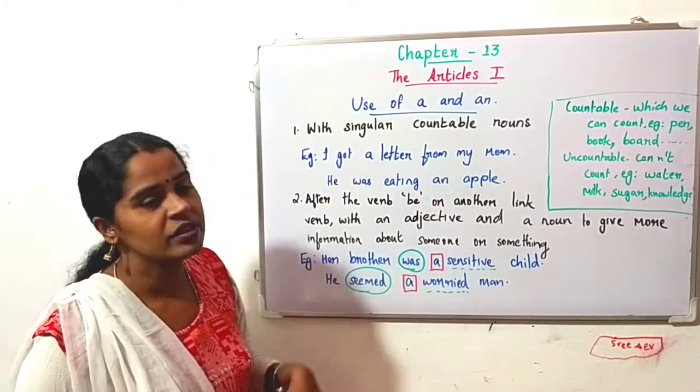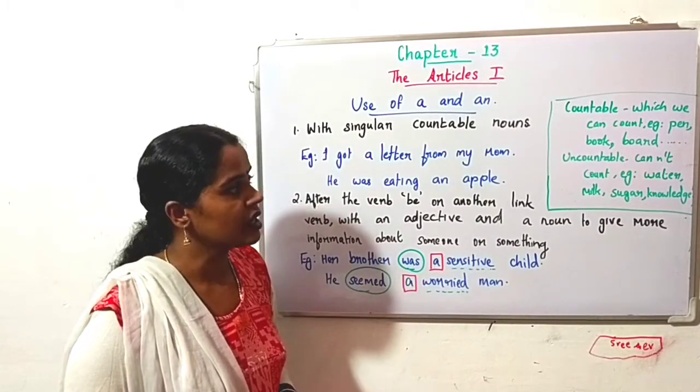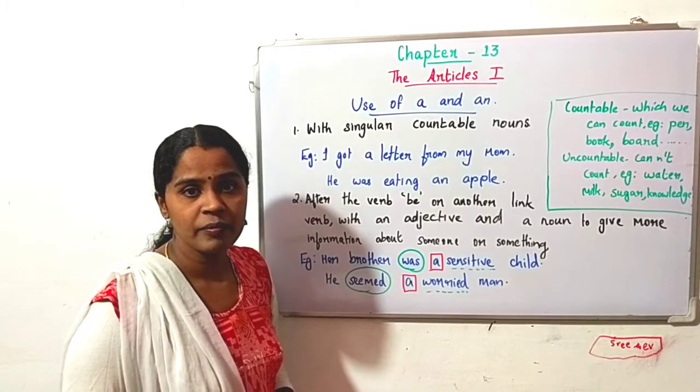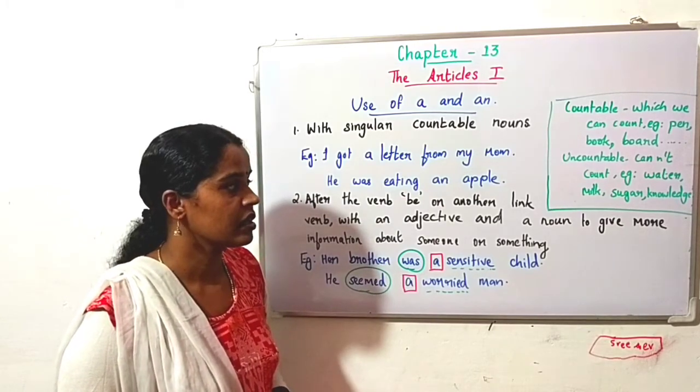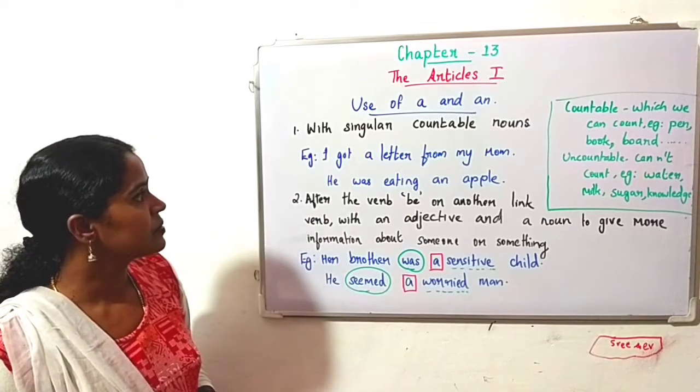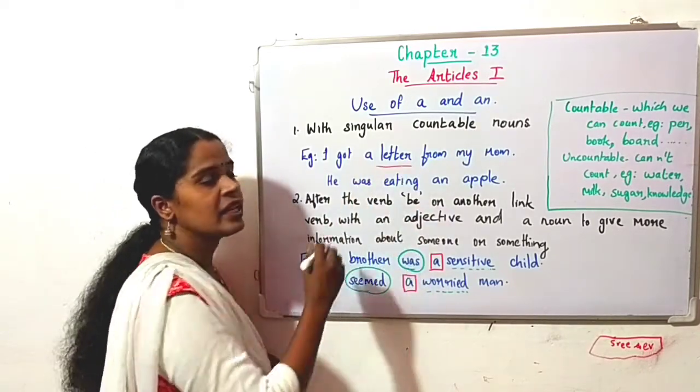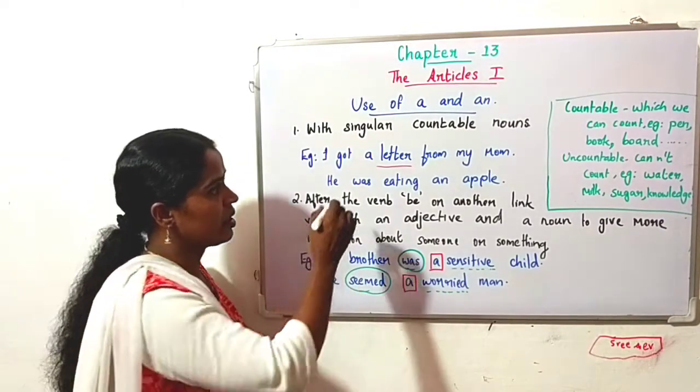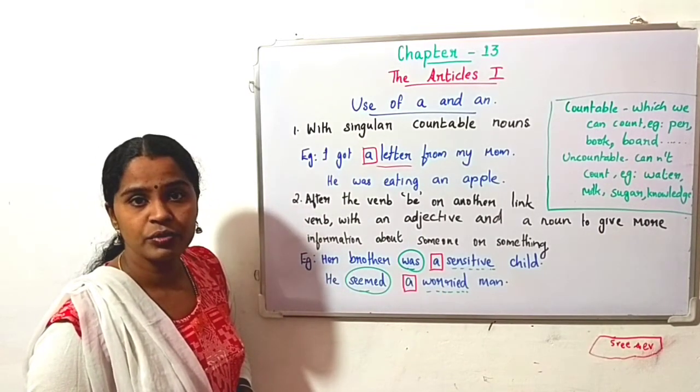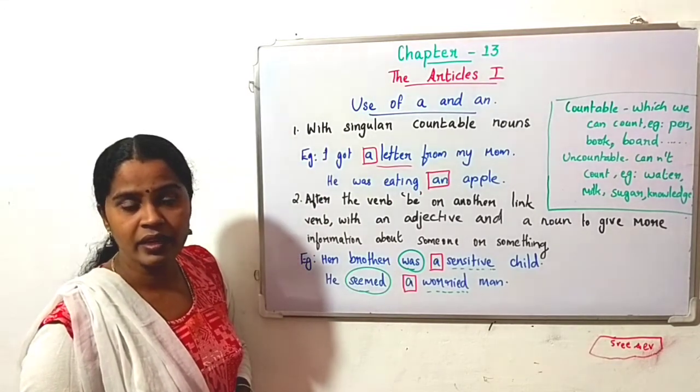First situation: with singular countable nouns. You must understand what are countable nouns. Countables are the nouns which we can count, for example: pen, book, board. Uncountable nouns are which cannot be counted, for example: water, milk, sugar, knowledge. Along with countable nouns only we can use 'a' and 'an'. I got a letter from my mom. Here, 'a letter' we can count. He was eating an apple. We can count an apple as one, two, three. So we can use 'a' or 'an' before countable nouns.